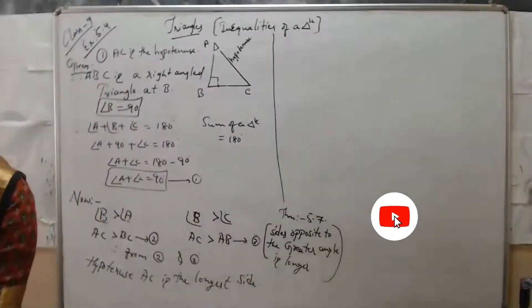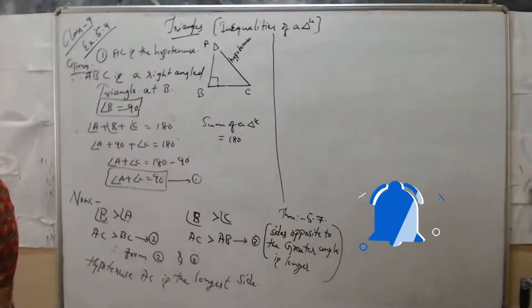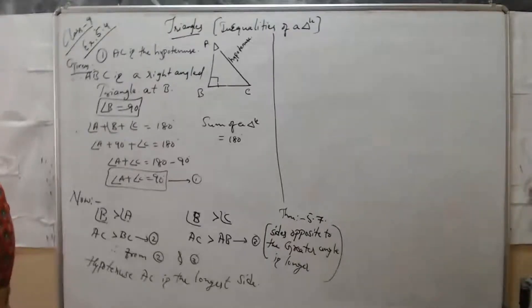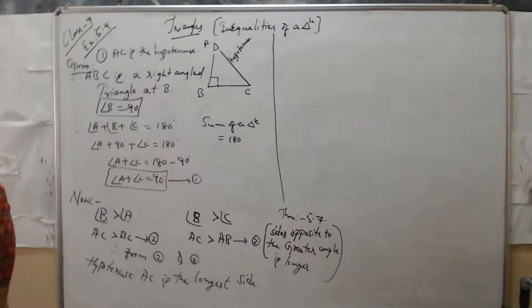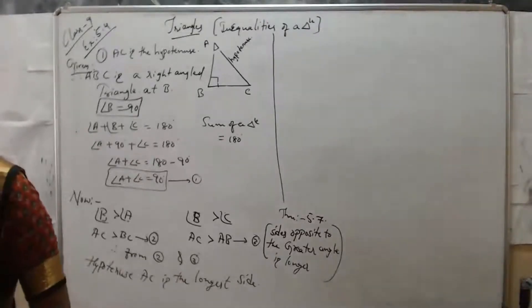Next, in figure 5.48, sides AB and AC of triangle ABC are extended to points B and C respectively. Also, angle PBC is less than angle QC. We need to show that AC is greater than AB.